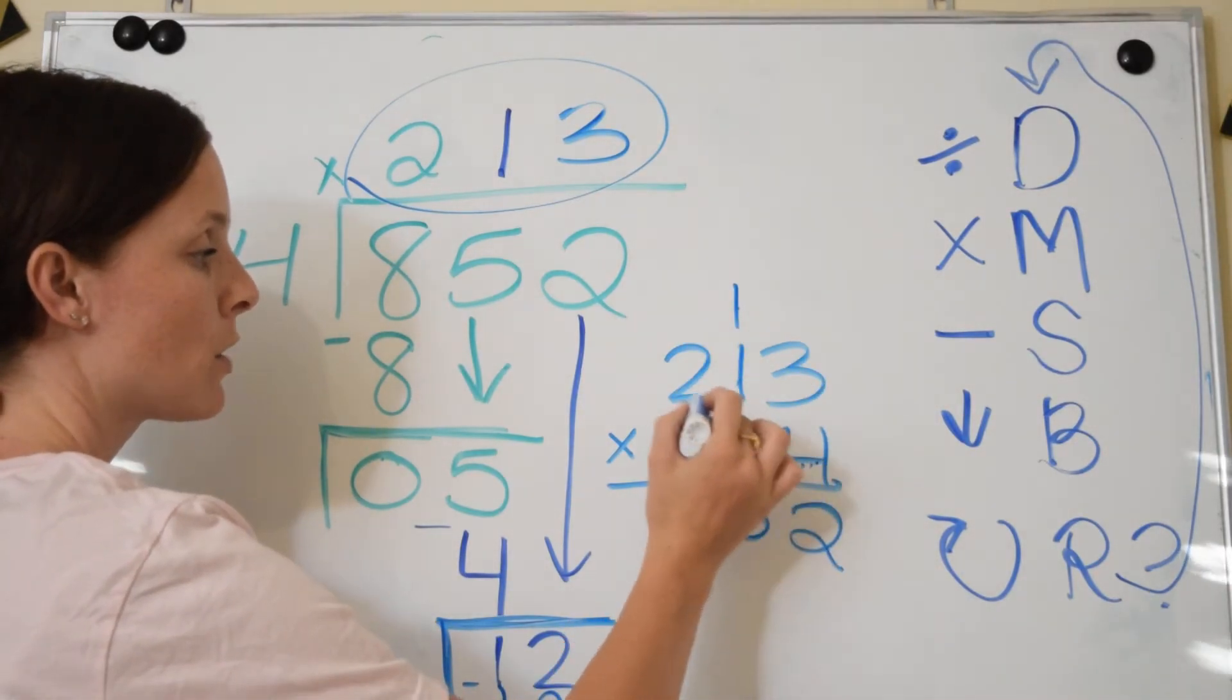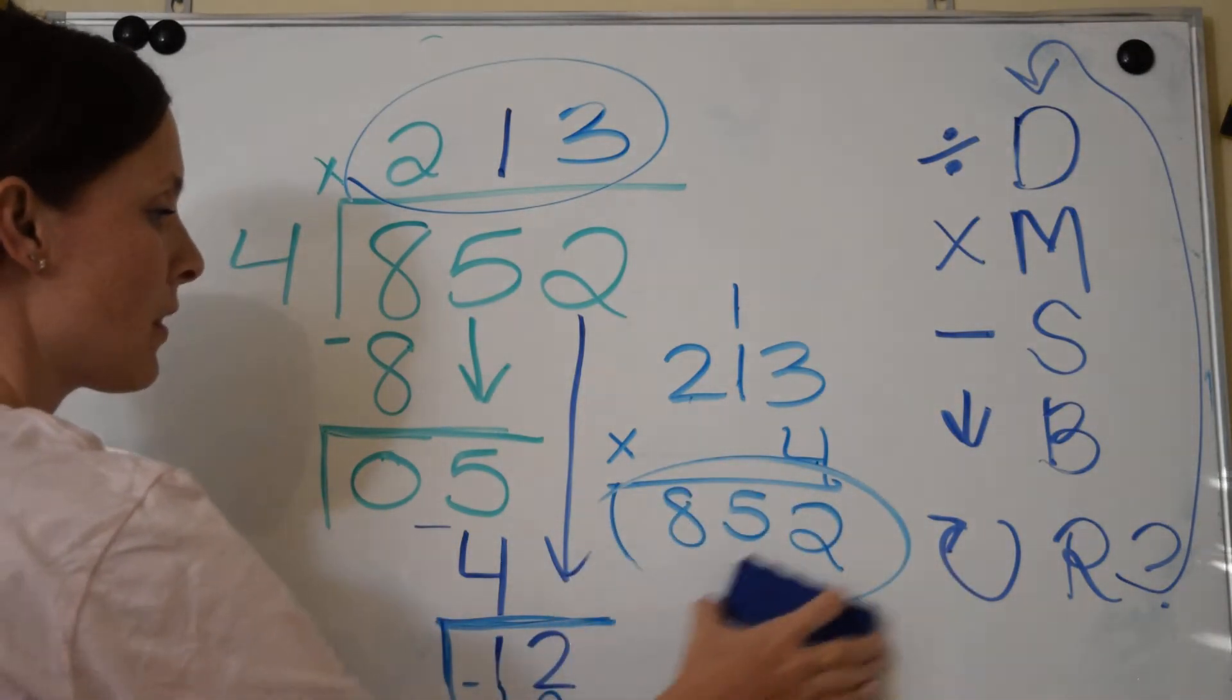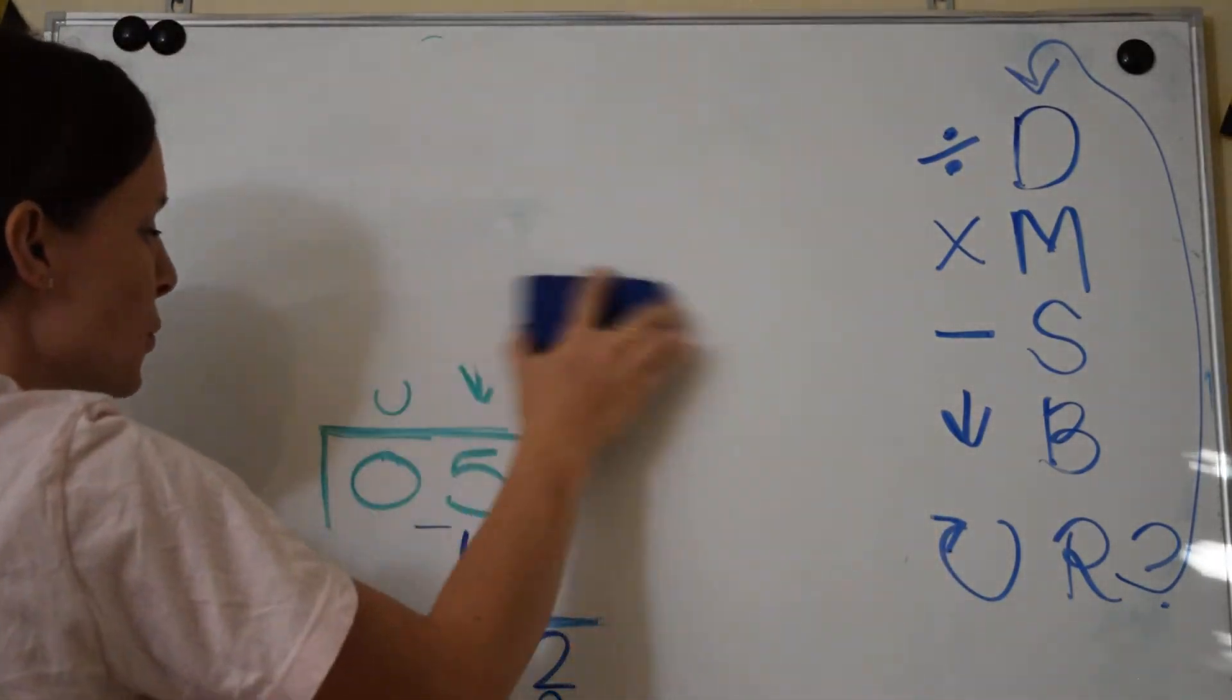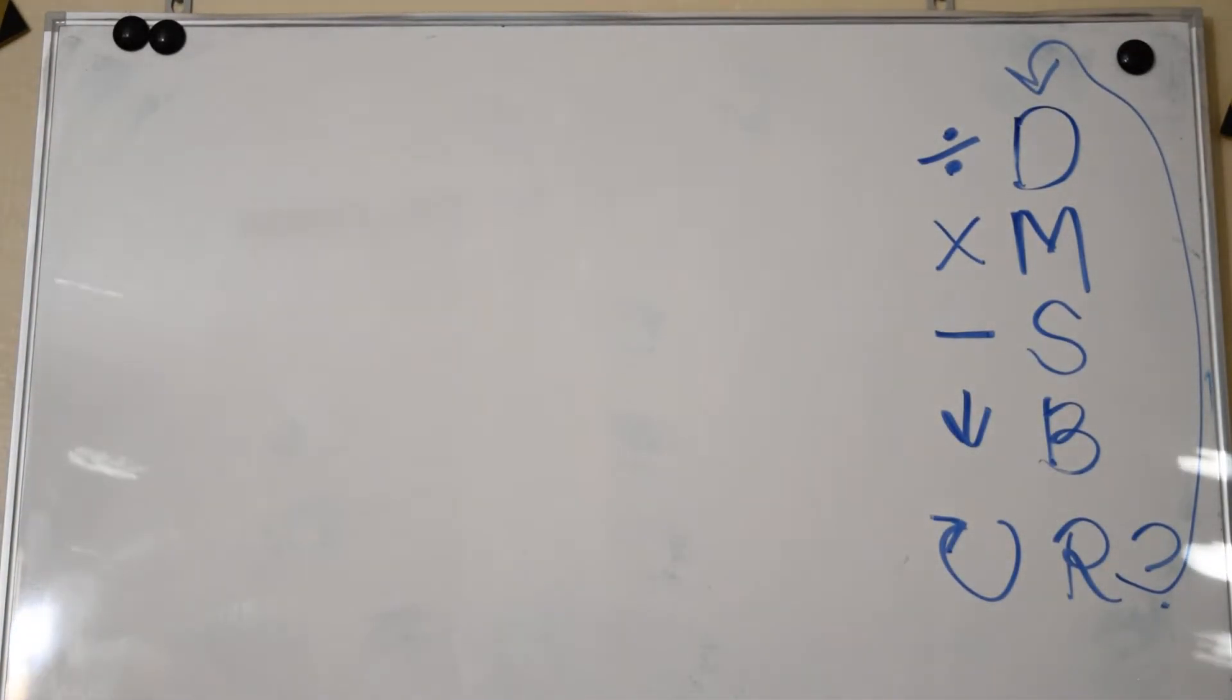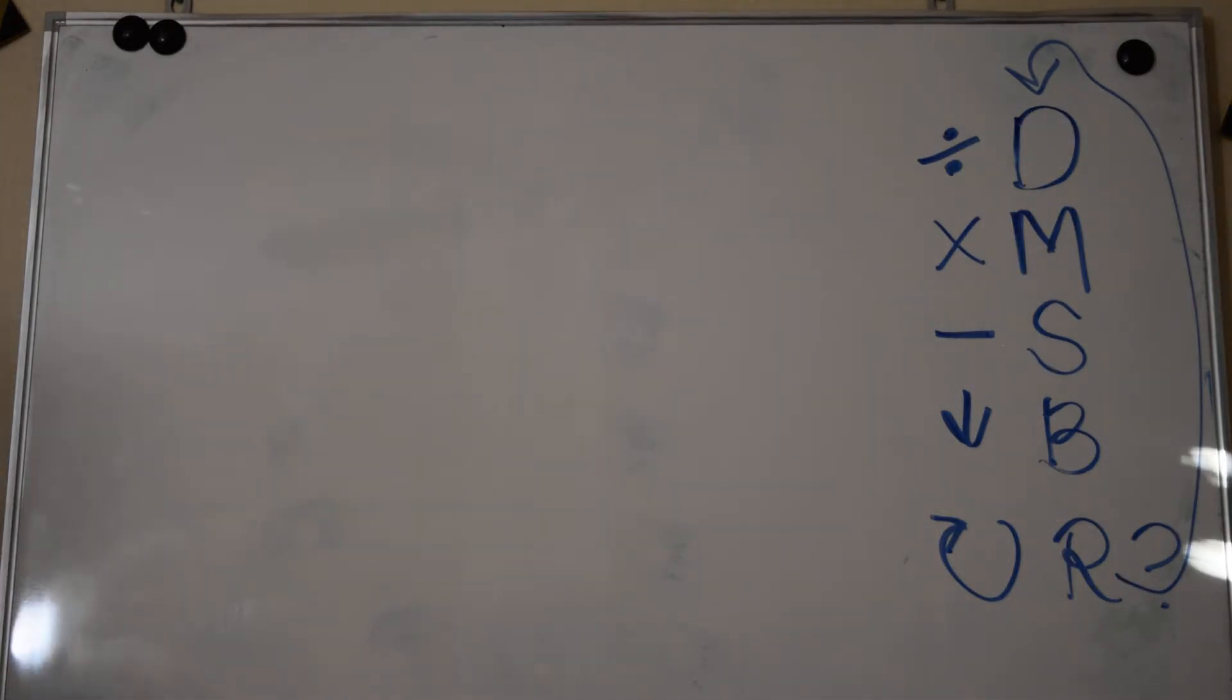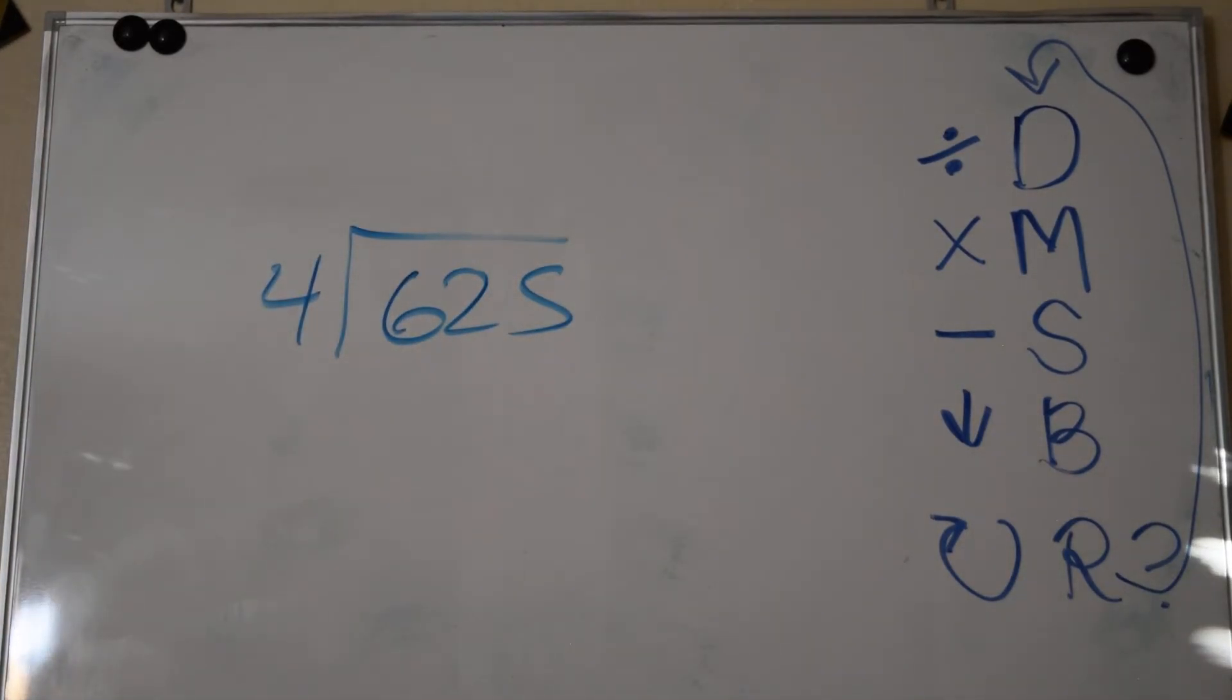Let's go ahead and do another example. Remember your steps: Does McDonald's Sell Burgers Regularly? Oh yes, they do. Here we go. Let's do one that might have a remainder: 625 divided by 4.